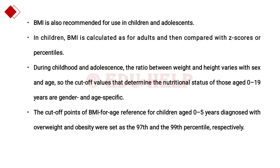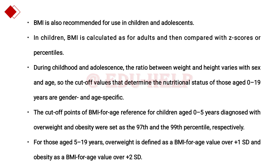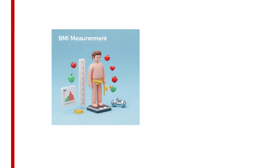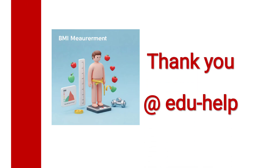For children aged 0 to 5 years, those diagnosed with obesity and overweight are set at the 99th and 97th percentile respectively. For the age group of 5 to 19 years, overweight is defined as a BMI-for-age value over plus 1 standard deviation, and obesity is defined as a BMI-for-age value over plus 2 standard deviations. Thank you for watching.